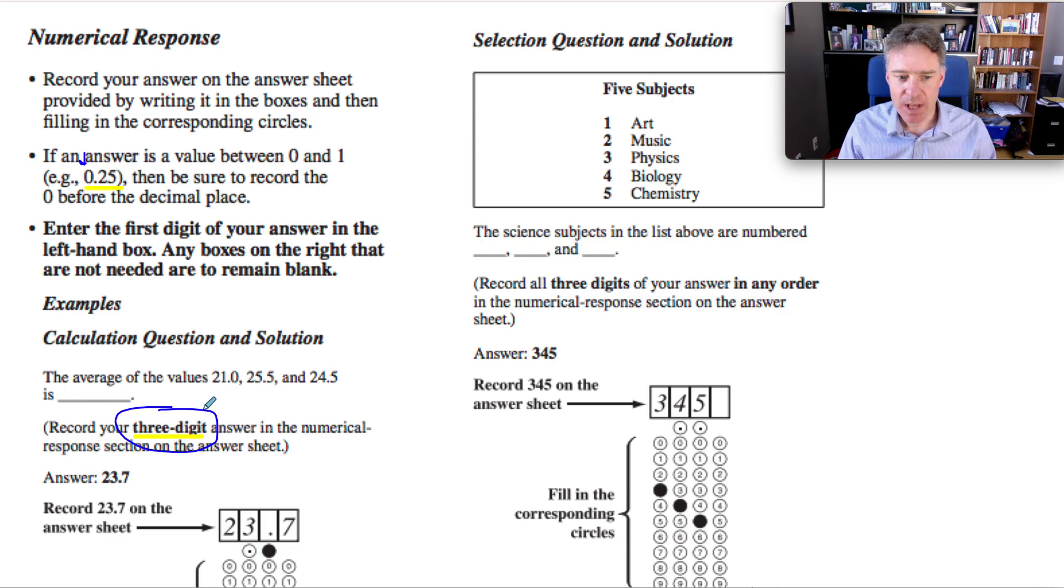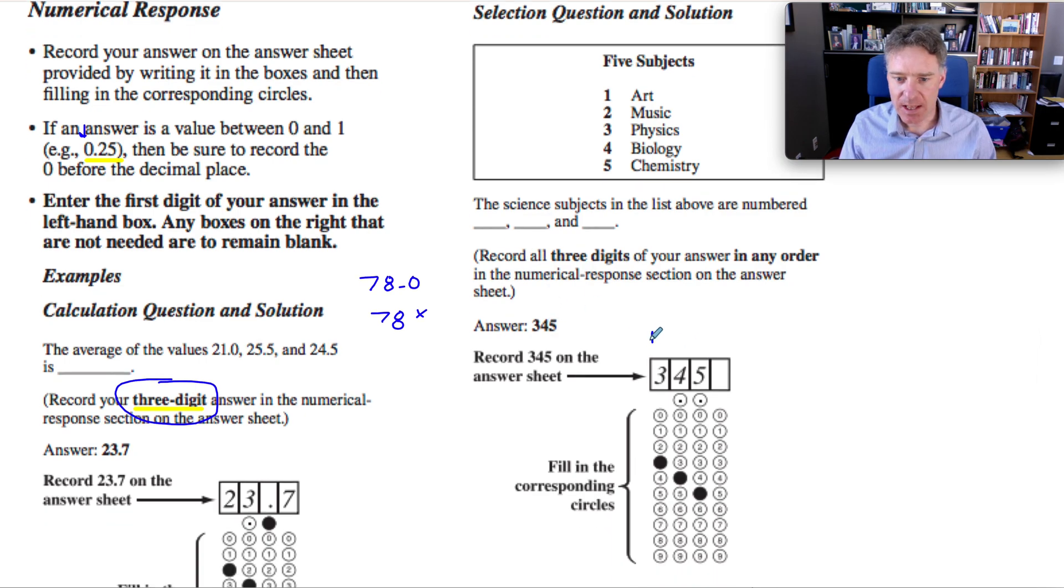You need to not drop digits. If they tell you to key in three digits and your last one is a zero, you've got to key that in or it can be marked wrong. That's been a comment in past bulletins where the correct answer was 78.0. And if you just wrote in 78, I believe this was referring to kilojoules in a thermal question, that the diploma would mark it wrong. So if it says three digits, just put in three digits.